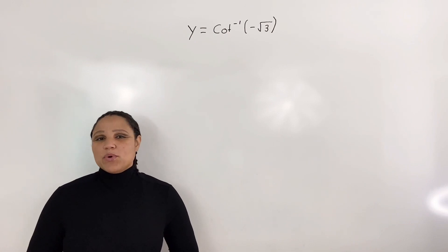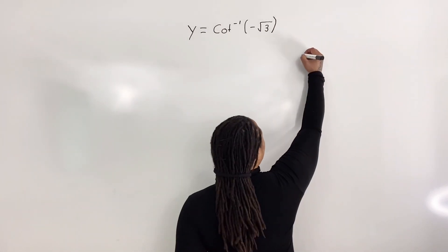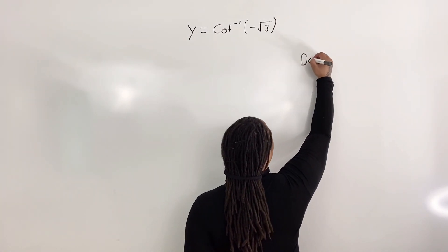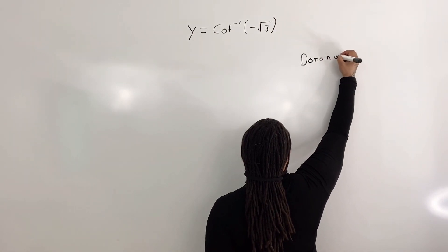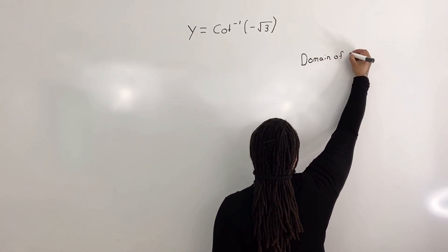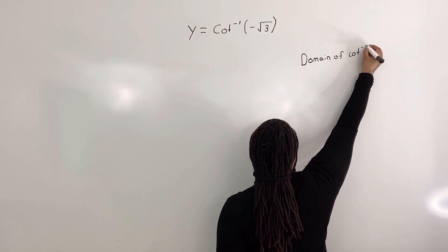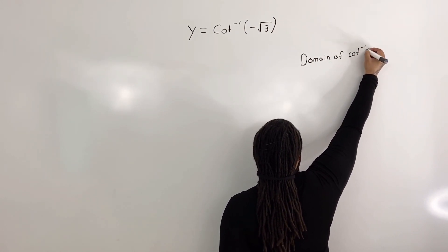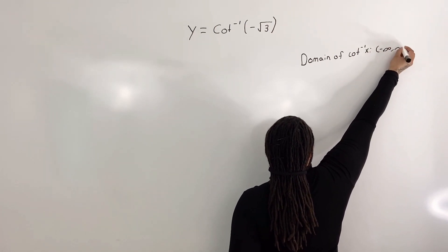So the first thing we want to do is recognize the domain of inverse cotangent. The domain of inverse cotangent x is from negative infinity to positive infinity.